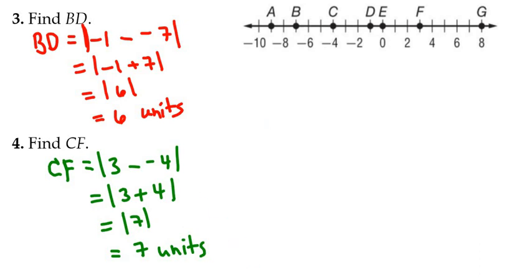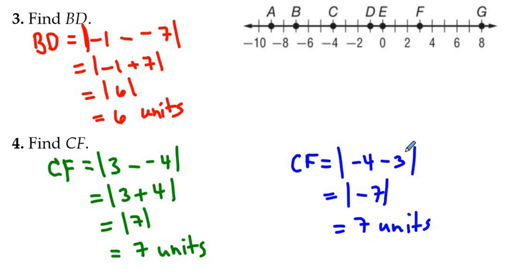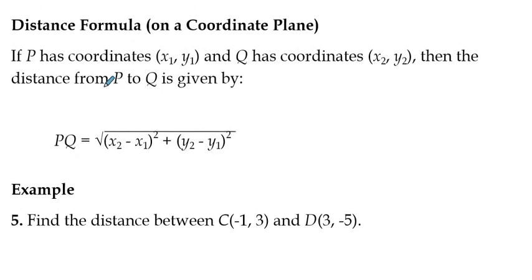Now, if we did it the other way and subtracted the other way, you'll get the same thing. If we took the coordinate of C first, which is negative four, and subtracted the coordinate of F, which was three, negative four minus three is negative seven. The absolute value of negative seven is seven, and it's still seven units no matter what. So you could do it either way. It doesn't much matter whichever preference you choose.